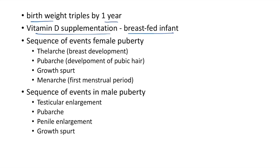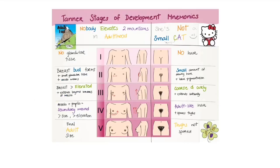Sequence of events in female puberty: thelarche (breast development), then pubarche (development of pubic hair), then growth spurt, then menarche (first menstrual period). Sequence in male puberty: testicular enlargement, then pubarche, then penile enlargement, then growth spurt.